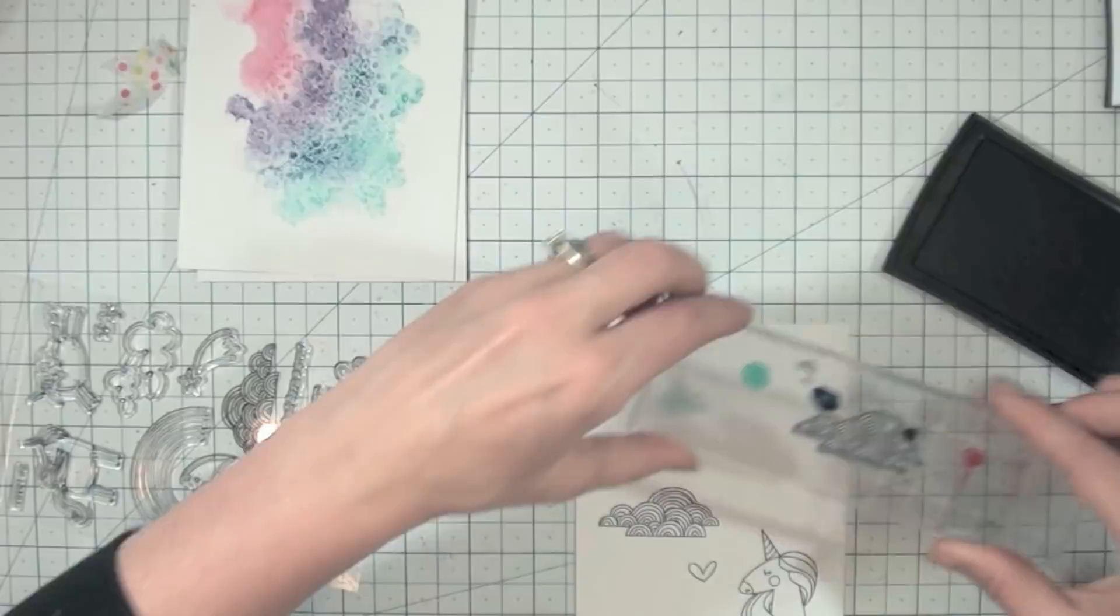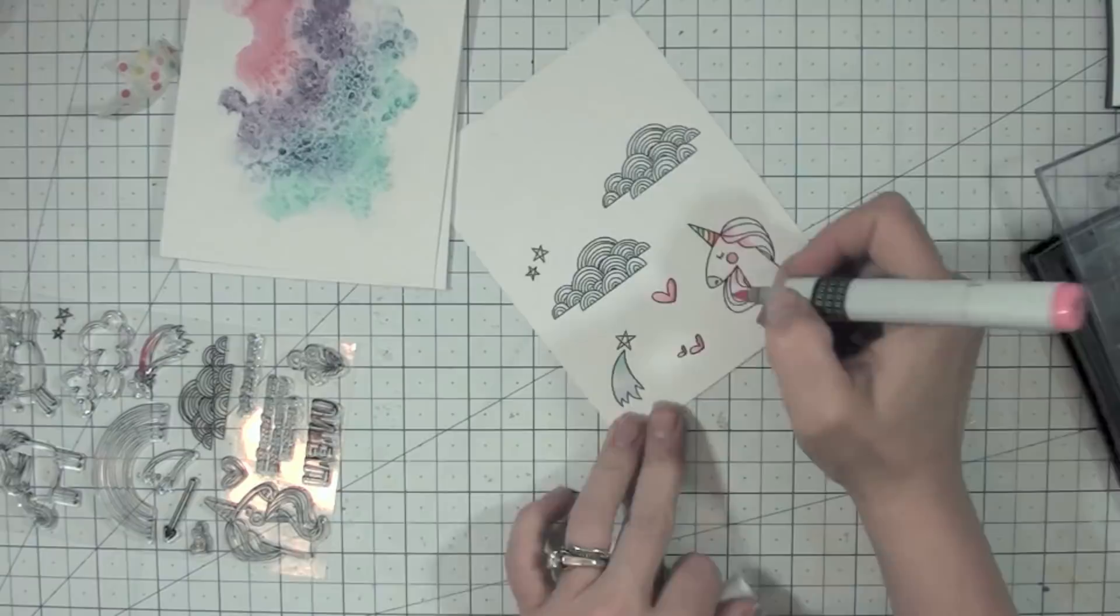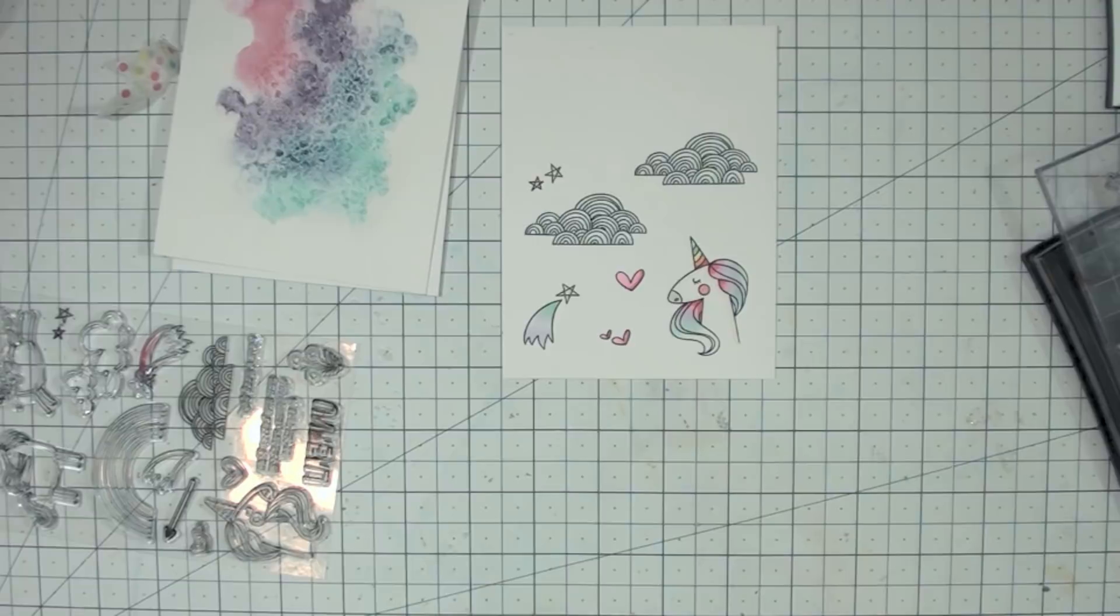I think it's really fun for this technique. So I'm gonna go ahead and use the new unicorns and rainbows stamp set. And I'm gonna stamp some of these images out. And these unicorns are just too cute. I cannot even stand it. They are so cute. So I'm gonna go ahead and stamp them out and color them in.